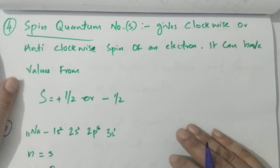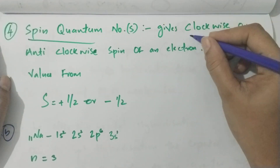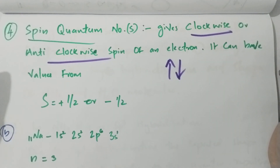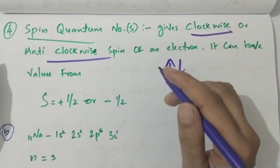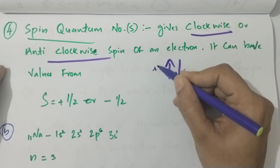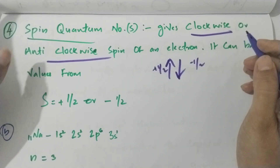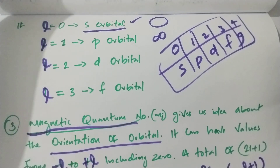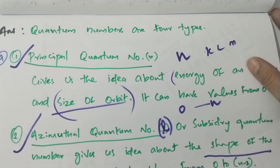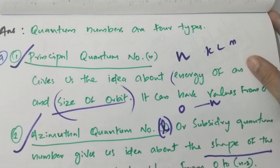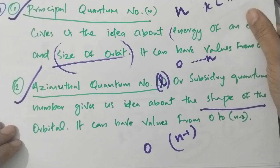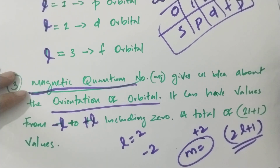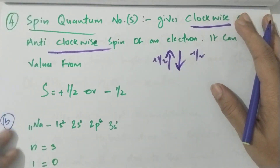The spin quantum number represents the clockwise or anticlockwise spin of the electron. The two values are plus half and minus half. To summarize: the principal quantum number is n, the azimuthal quantum number is l, the magnetic quantum number is m, and the spin quantum number is s.